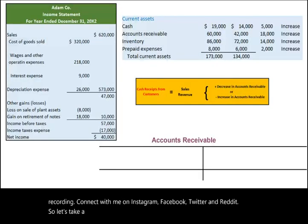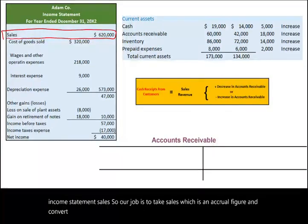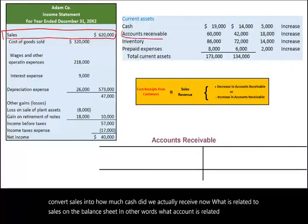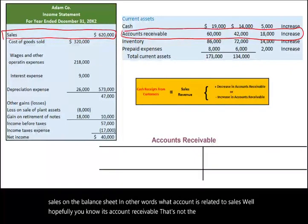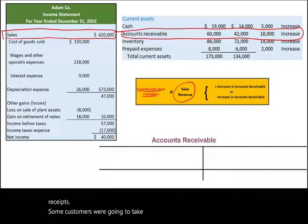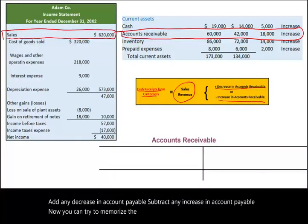Let's start with the first number on the income statement: sales. Our job is to take sales, which is an accrual figure, and convert it into how much cash we actually received. What account on the balance sheet is related to sales? Hopefully you know it's accounts receivable. To convert sales to cash receipts from customers, we take sales revenue, add any decrease in accounts receivable, or subtract any increase in accounts receivable.